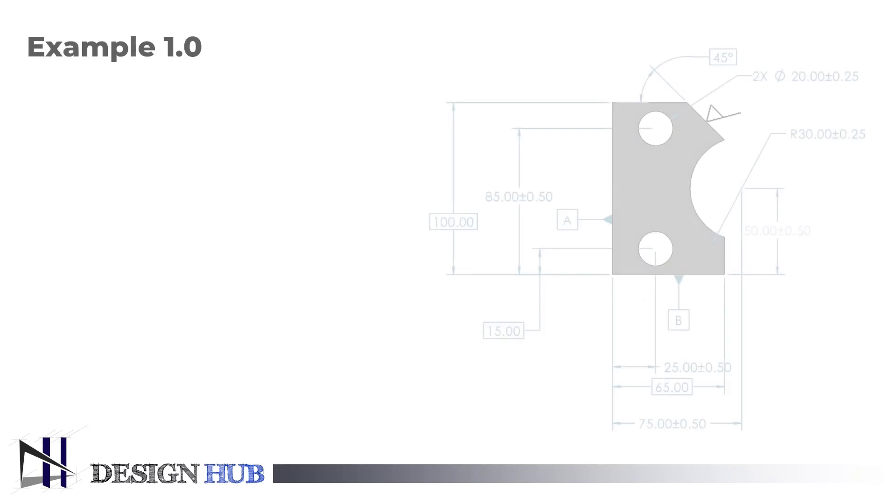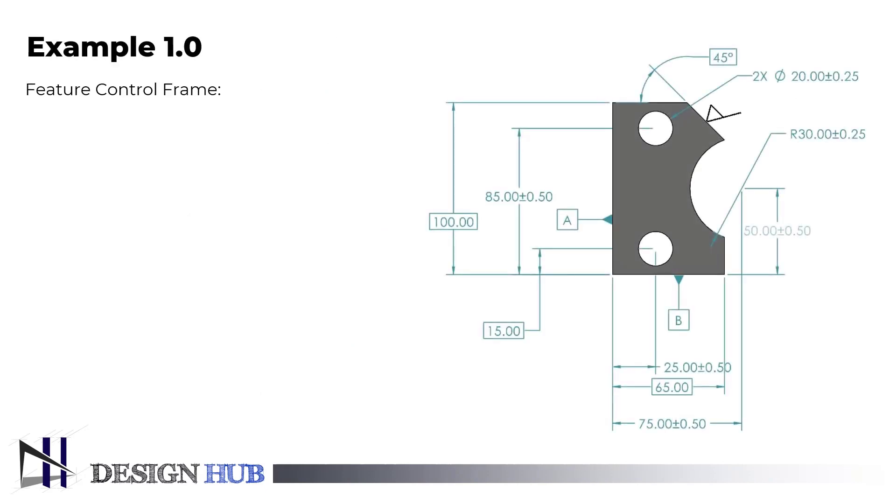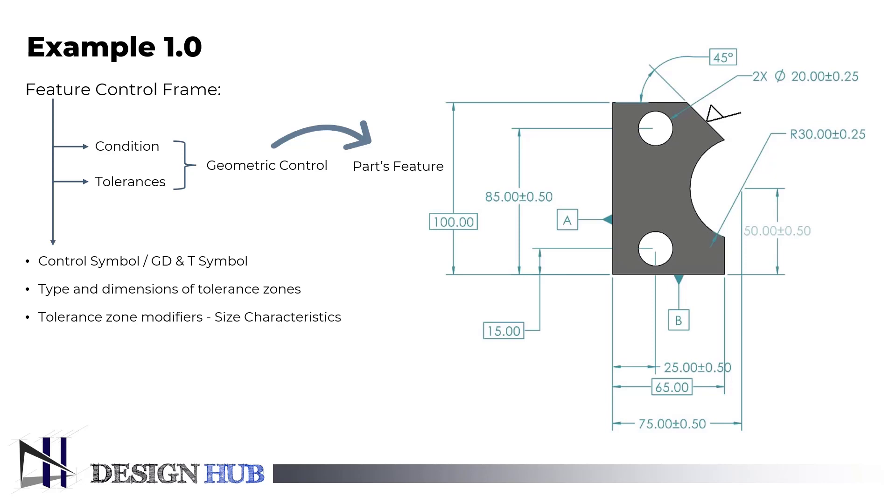Now, let's take one example and understand its dimensions and tolerances given to it. We will understand what the feature control frame is. A feature control frame is required in GD&T to describe the conditions and tolerances of a geometric control on a parts feature. The feature control frame is composed of four parts: control symbol or GD&T symbol, type and dimensions of tolerance zones, tolerance zone modifiers such as size characteristics, and datum citations if required by the GD&T symbol.